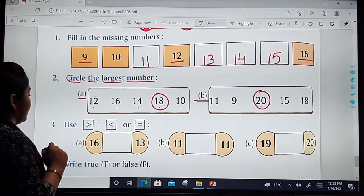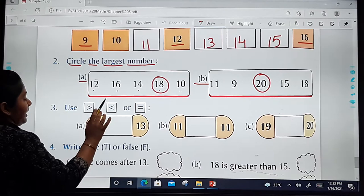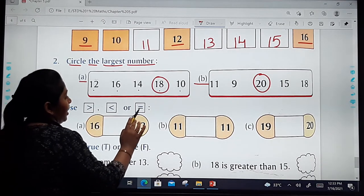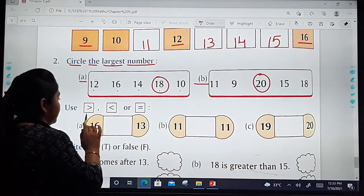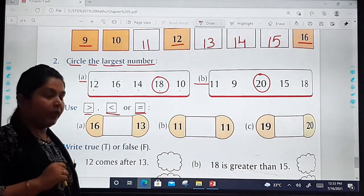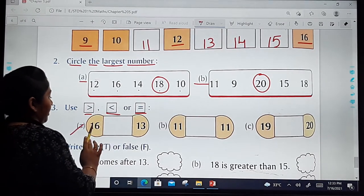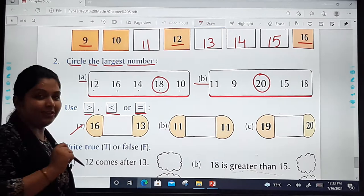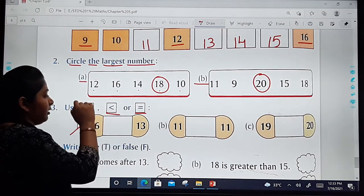Let's see question number 3. Use greater than, smaller than, or equals to. Greater than, smaller than, or equals to. Okay? Now in the first one, two numbers are given: 16 and 13. Okay? The two numbers are 16 and 13.